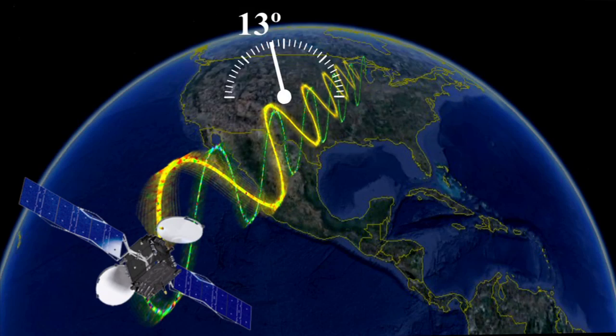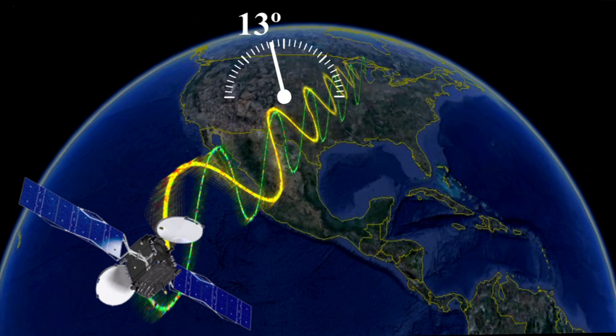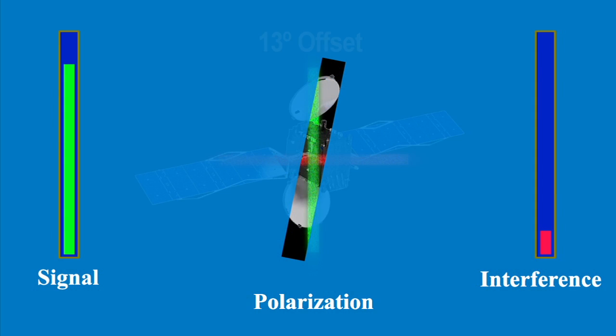The solution is to change the polarization setting of the receiving antenna by 13 degrees, or half of the 26 degree offset of the incoming signal. With a 13 degree offset, signal strength will be almost maximum for both old and new satellites.